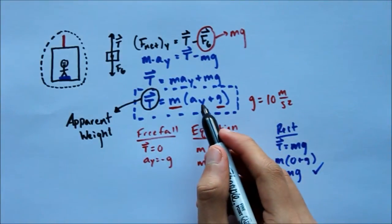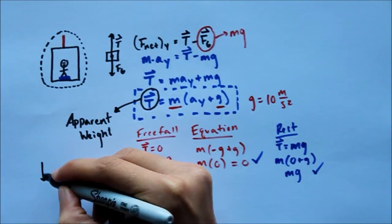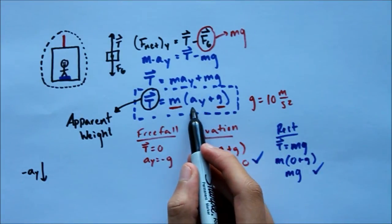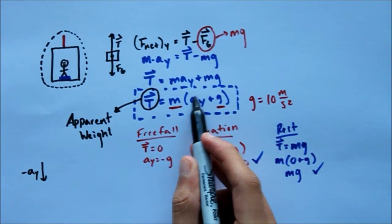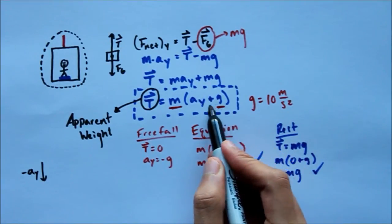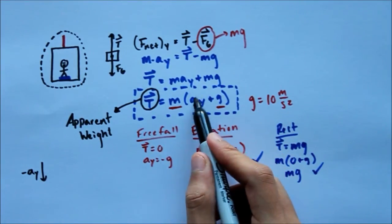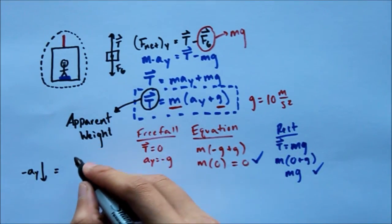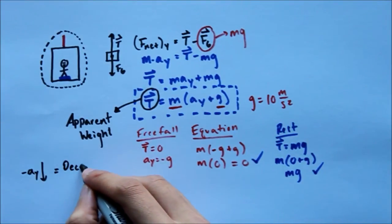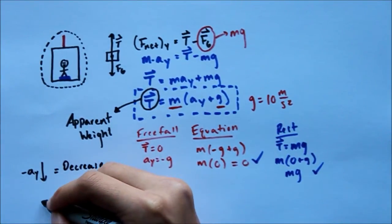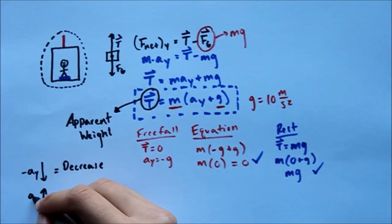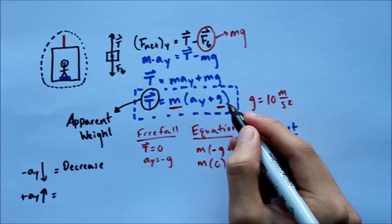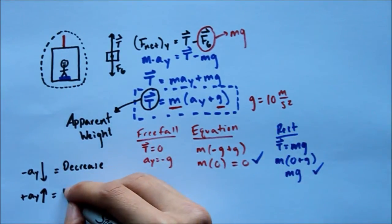Now let's get into what the equation means. If my acceleration is negative — accelerating downward — this quantity goes down, and since I'm always adding a constant g, my apparent weight decreases. So a negative ay equals a decrease in apparent weight. And if I have a positive ay, this quantity increases, g stays the same, m stays the same, so my apparent weight will increase.